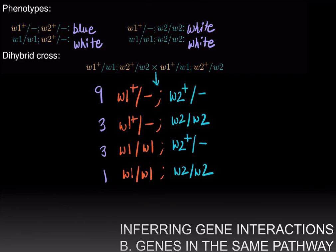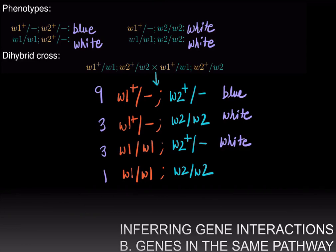When we write down the phenotypes, however, even though the genotypes of these classes differ, many of them have the same phenotype. If you are dominant-dominant (W1+/– and W2+/–), you are blue. If you are dominant-recessive (W1+/– and W2/W2), you are white. In the third case, where you are W1/W1 but have the dominant phenotype of the second gene (W2+/–), you are still white because colorless precursor 1 never gets converted. And if you are the double mutant, you are still white.